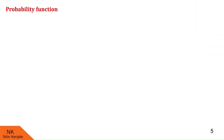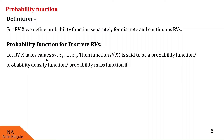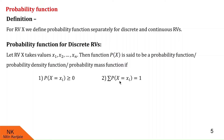Now let us proceed to the probability function. We define the probability function separately for discrete as well as continuous random variables. Let X be the discrete random variable taking values x₁ to xₙ. Then the function p(x) is said to be a probability function — also called probability density function or probability mass function — if it satisfies two conditions: first, P(X = xᵢ) ≥ 0 for all xᵢ; and second, the summation of P(X = xᵢ) equals 1, meaning the sum of probabilities at all values is always equal to 1.